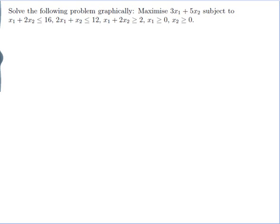Solve the following problem graphically. Maximise 3x1 plus 5x2, subject to: x1 plus 2x2 is less than or equal to 16, 2x1 plus x2 is less than or equal to 12, x1 plus 2x2 is greater than or equal to 2, x1 is greater than or equal to 0 and x2 is greater than or equal to 0.